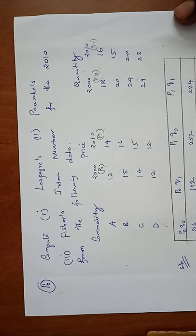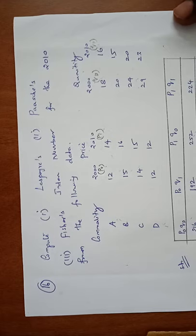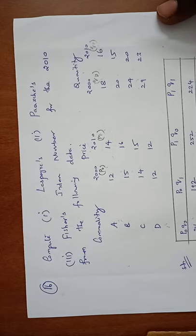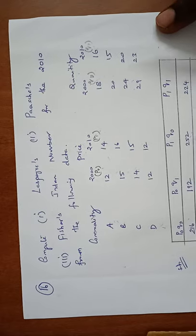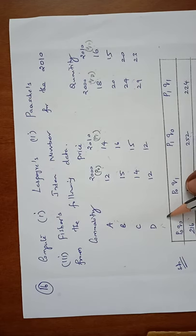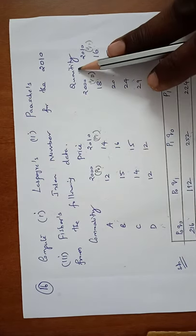Sum number 16. Compute Laspeyres, Paasche's and Fisher's Ideal index number for the year 2010 from the following data. Four commodities are given, price and quantities are given.